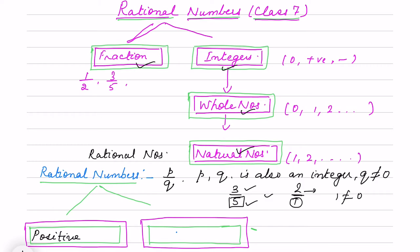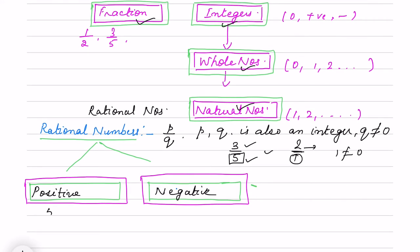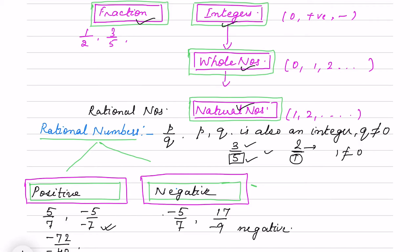One is positive rational number, and the second is negative rational number. When both the numerator and denominator are either both positive or both negative, we say it is a positive rational number. But when any one is negative — either the numerator is negative or the denominator is negative — those are called negative rational numbers.